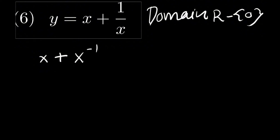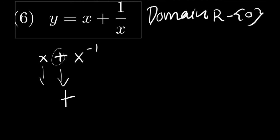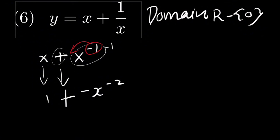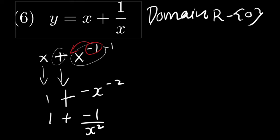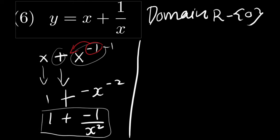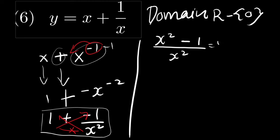To derive this, we write the plus as it is. The derivative of x is 1. For the second term, we take the negative 1 and multiply it, getting negative x to the power of negative 2. Rewriting, we have 1 plus negative 1 divided by x squared, since x to the power of negative 2 equals 1 over x squared. To find the critical points, we make this into a single fraction by cross multiplication. We get x squared minus 1 divided by x squared. To find critical points, we check where the derived function equals zero and where it is undefined.